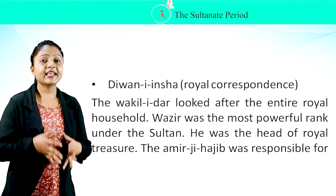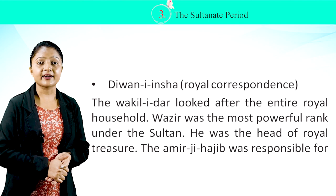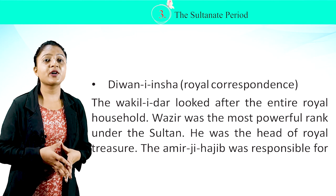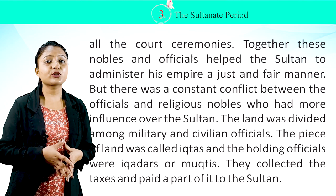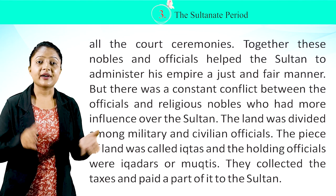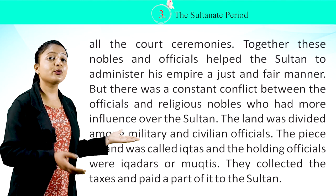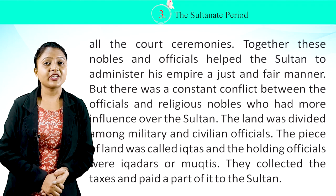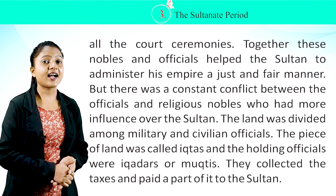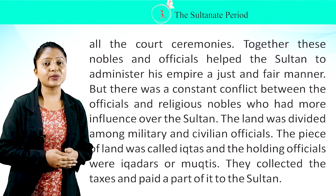The Vakil-i-Dar looked after the entire royal household. The Vazir was the most powerful rank under the Sultan and head of the royal treasury. The Amir-i-Hajib was responsible for all court ceremonies. Together, these nobles and officials helped the Sultan administer his empire justly and fairly, though there was constant conflict between officials and religious nobles. The land was divided among military and civilian officials; each piece of land was called an Iqta, and the holding officials were called Iqtadars or Muktis. They collected taxes and paid a part to the Sultan.